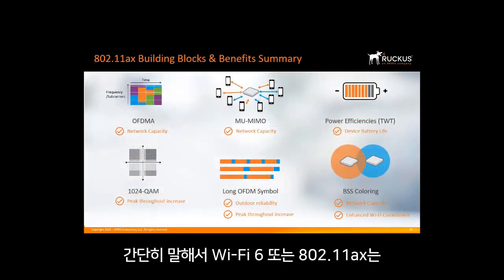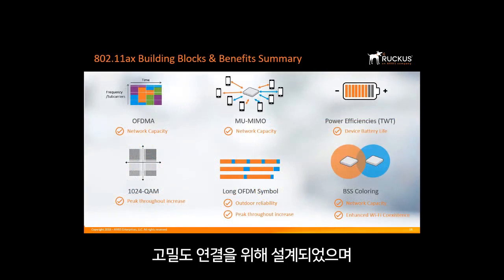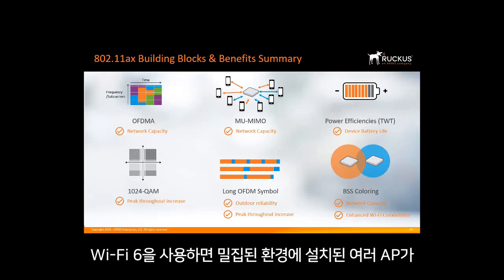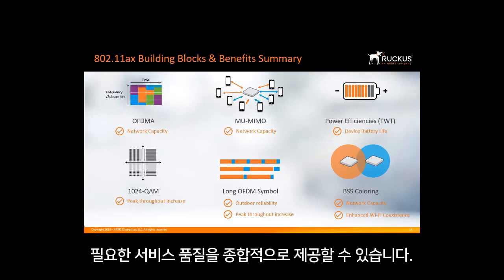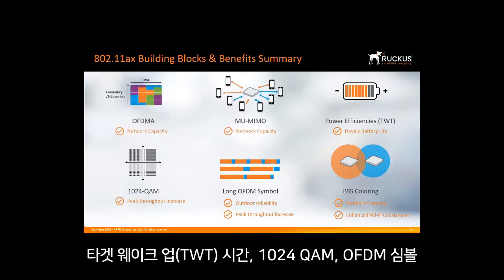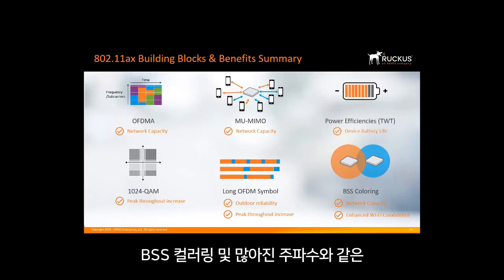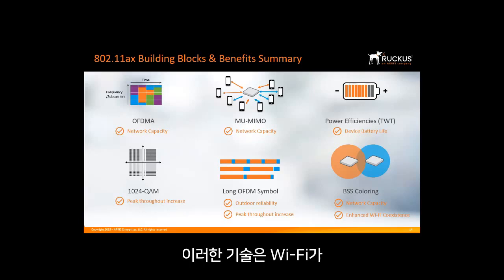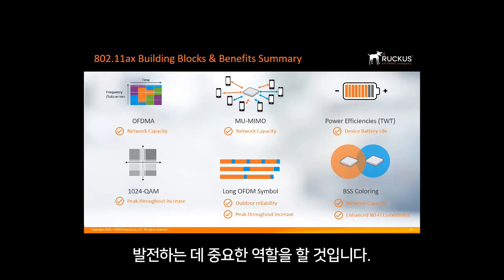In brief, Wi-Fi 6 or 802.11ax is designed for high-density connectivity and offers up to a four-fold capacity increase over its 11ac Wi-Fi 5 predecessor. Multiple APs deployed in dense device environments can collectively deliver required quality of service to more clients with more diverse usage profiles. This is made possible by technologies such as OFDMA, multi-user MIMO with 8 uplinks and 8 downlinks, Target Wake Time, 1024 QAM, Long OFDM Symbol, BSS Coloring, and increased frequencies. These technologies will play a critical role in helping Wi-Fi evolve into a collision-free, deterministic wireless technology as the IEEE looks to integrate these mechanisms into future wireless standards.